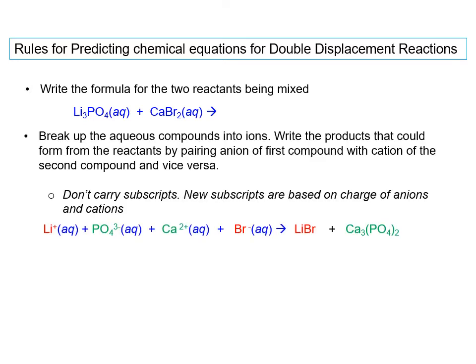Next, we break up the aqueous compounds into ions. So here, we wrote lithium+ with phosphate3-. Phosphate has a charge of 3-, lithium is +1, calcium is 2+, and bromide is -1. Then we form new products by switching the cations with each other.